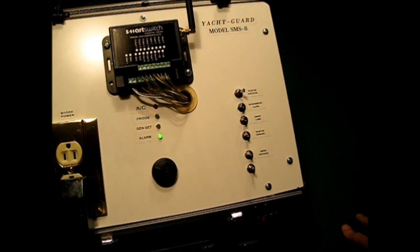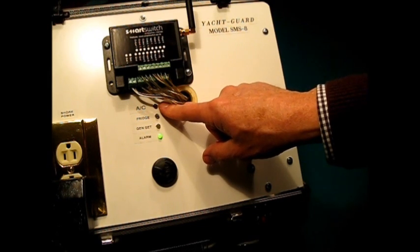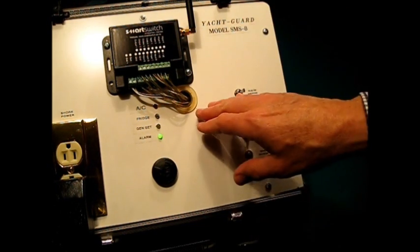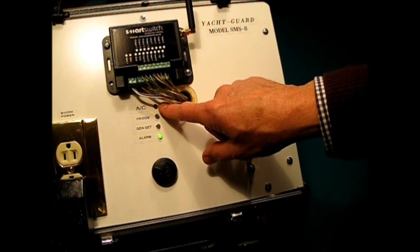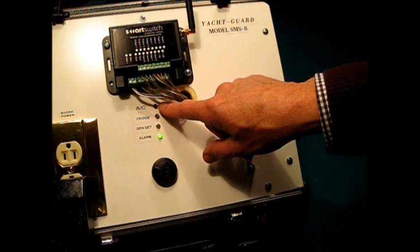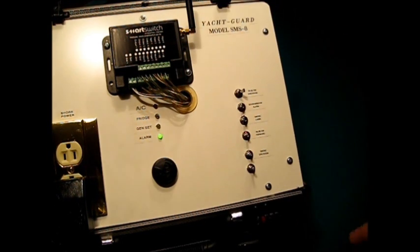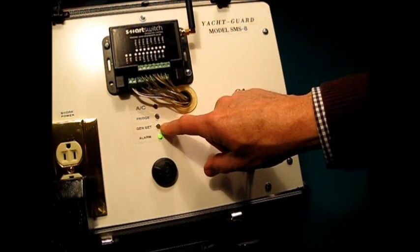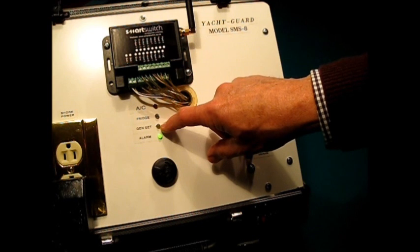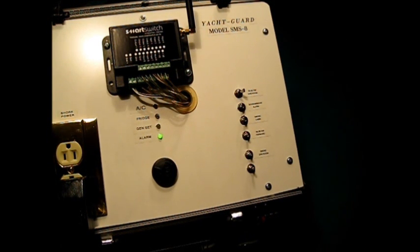One of the features that was mentioned earlier was the ability to control up to four outputs from your cell phone. In the event that you were, for example, on your way to your boat and you wanted the air conditioning unit to turn on ahead of your arrival, you can send a text message to the unit and the air conditioner can be turned on. Similarly, the fridge and in the case of a low battery condition, the generation set can be turned on as well to recharge the battery.